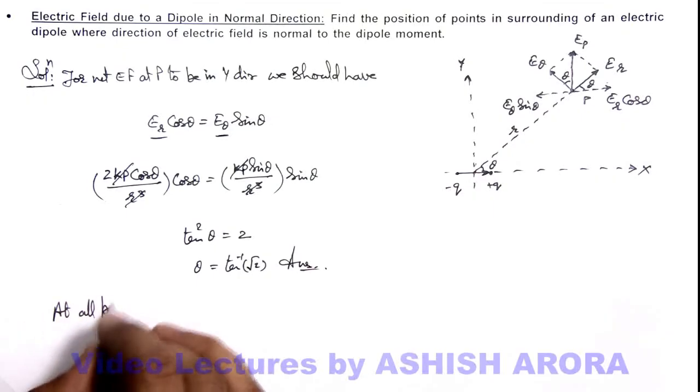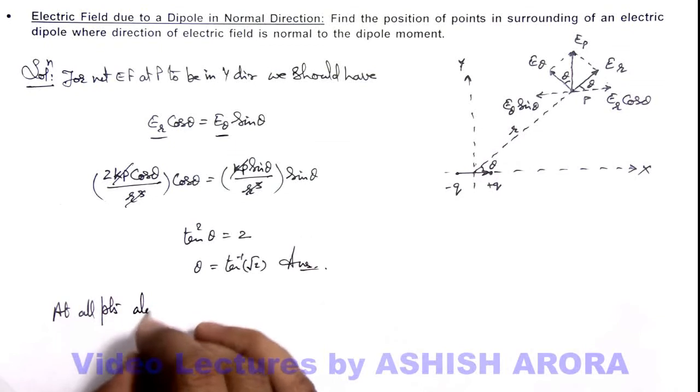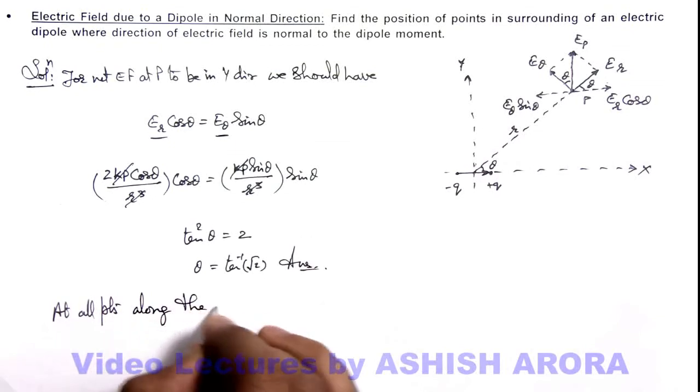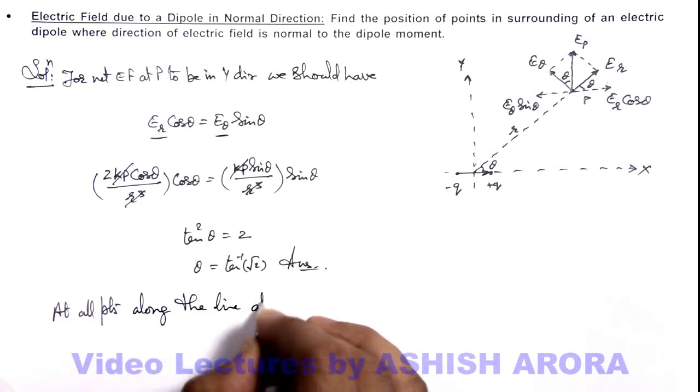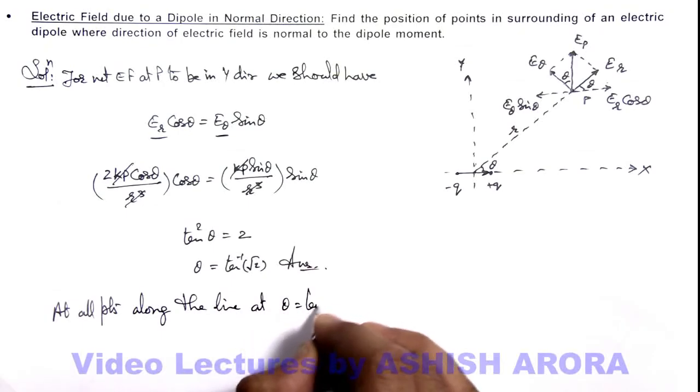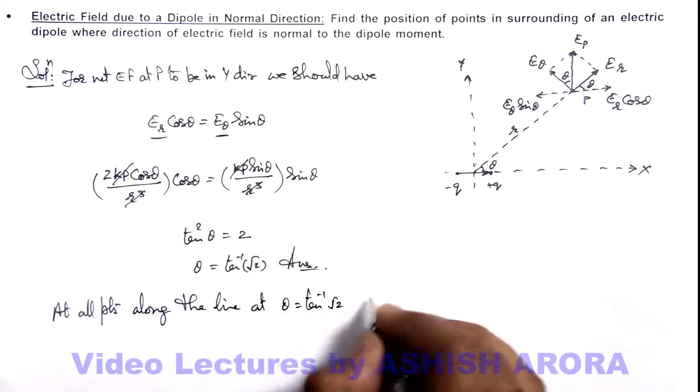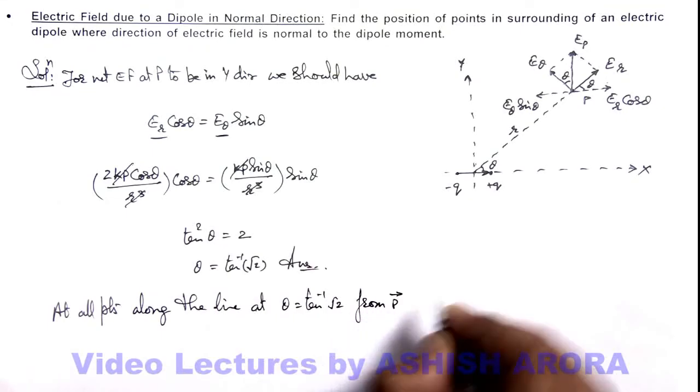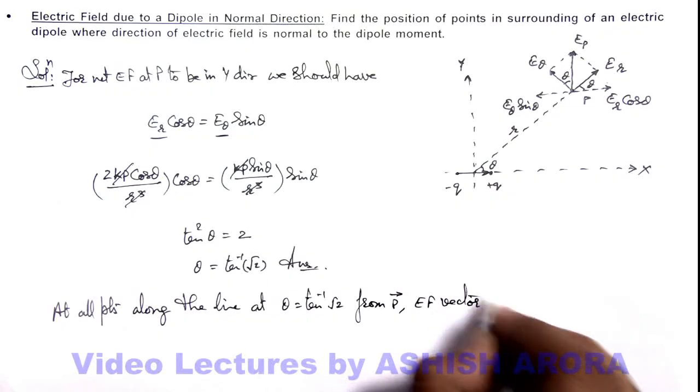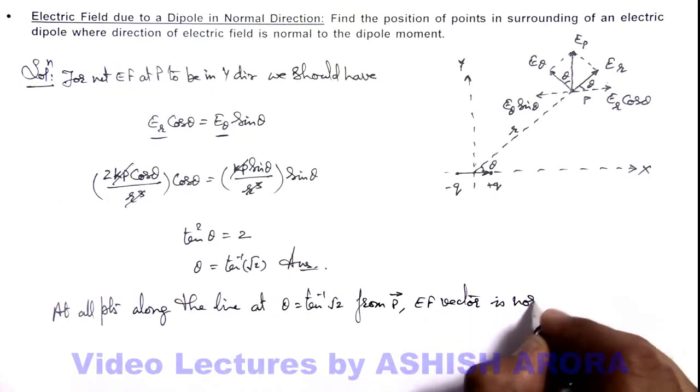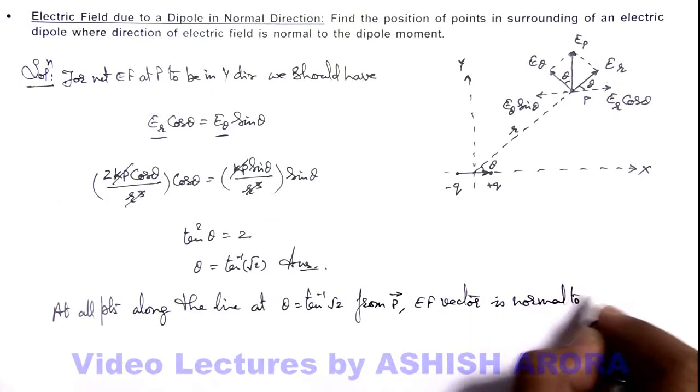At all points along the line at theta equals tan inverse of root 2 from the direction of dipole moment vector, electric field vector is normal to p vector. This is what we were required to calculate.